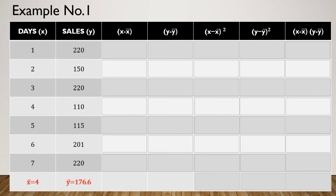Now let's look at an example. On the x column we have the number of days: day 1, day 2, day 3, day 4, day 5, day 6, and day 7. For y, we have the sales for each particular day.